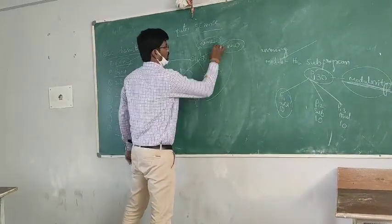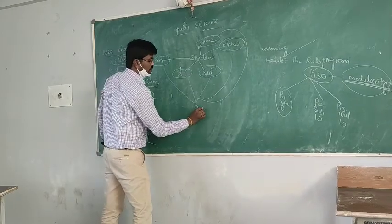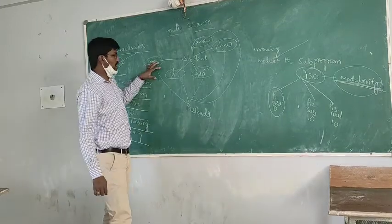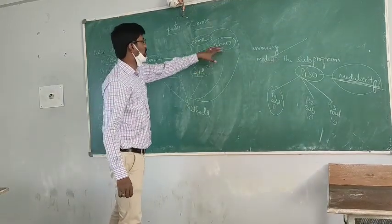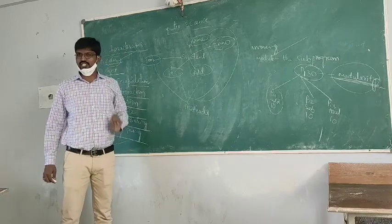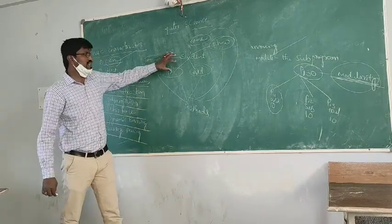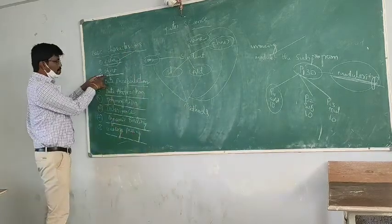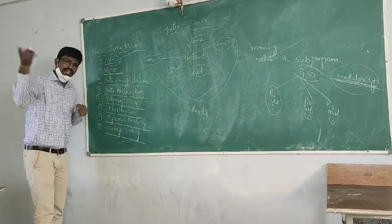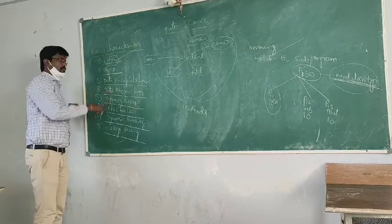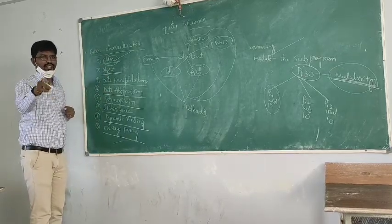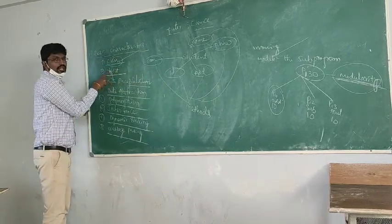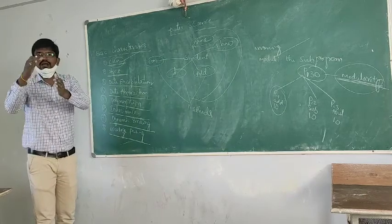For example, taking a student as an object — the attributes of a student are name, ID, address, phone number, and so on. These are called data members. The operations performed on these data members are done through member functions, also called methods. So a class contains both data members and member functions.